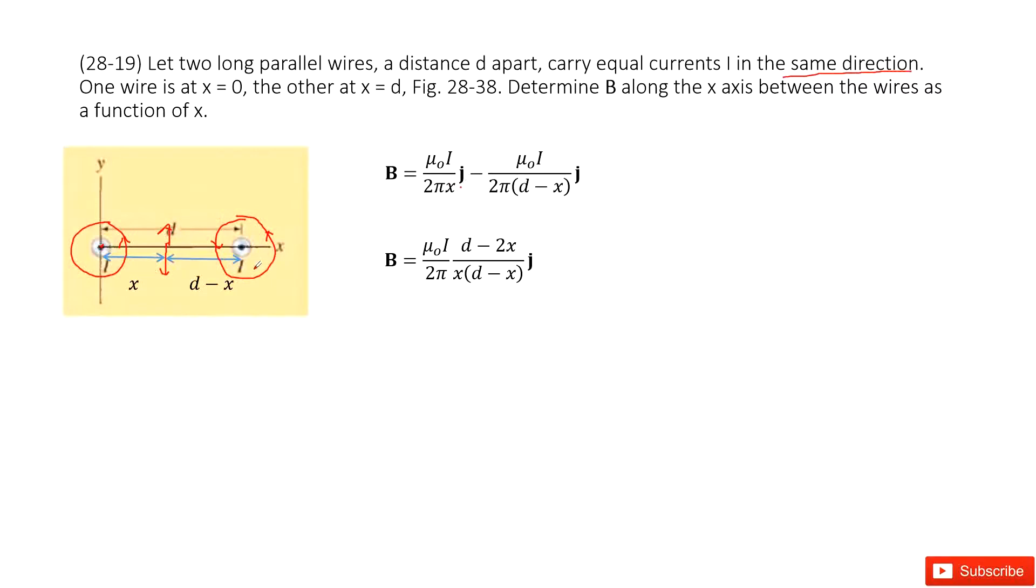And for wire two, it's μ₀i divided by 2π(d - x) with a negative sign there, telling us the opposite direction. And then simplified, you get the answer there. Thank you.